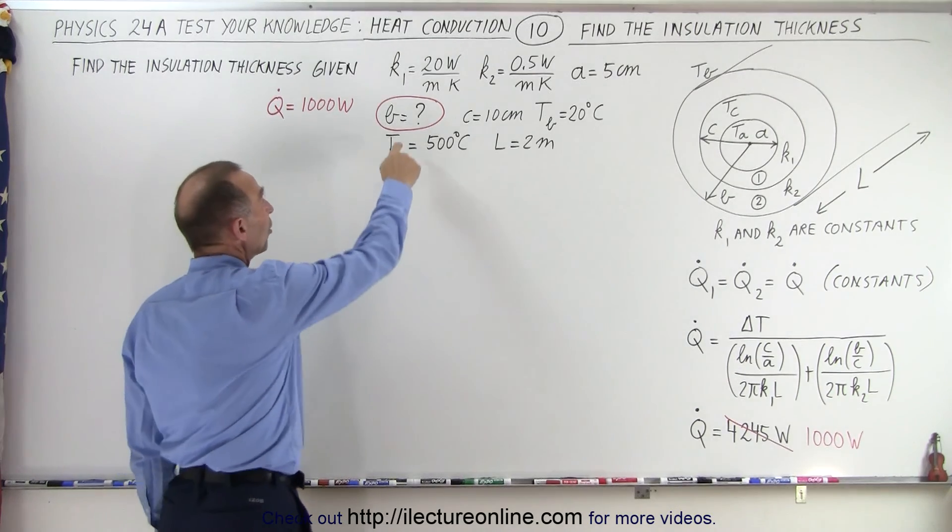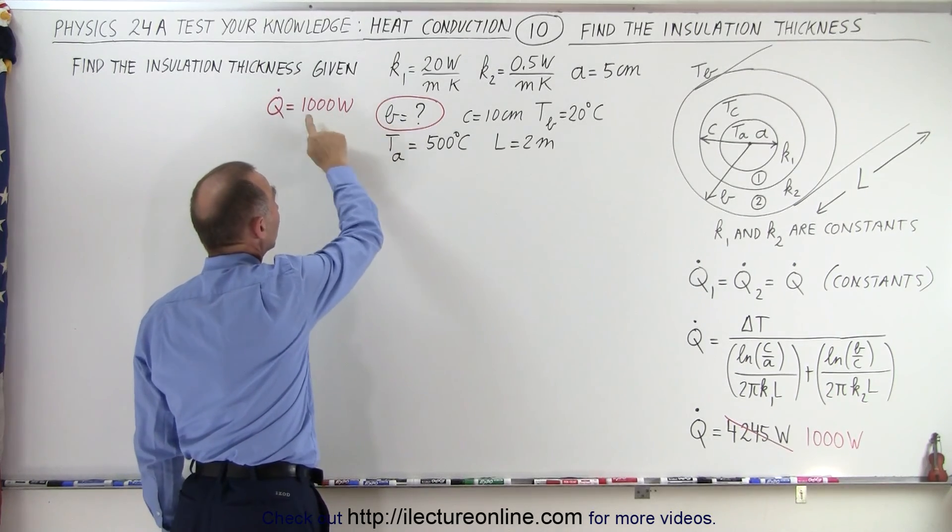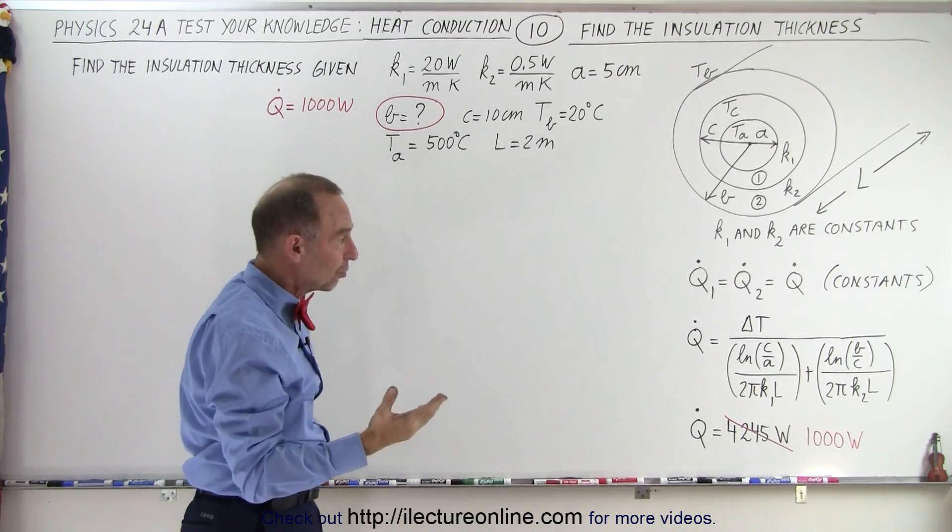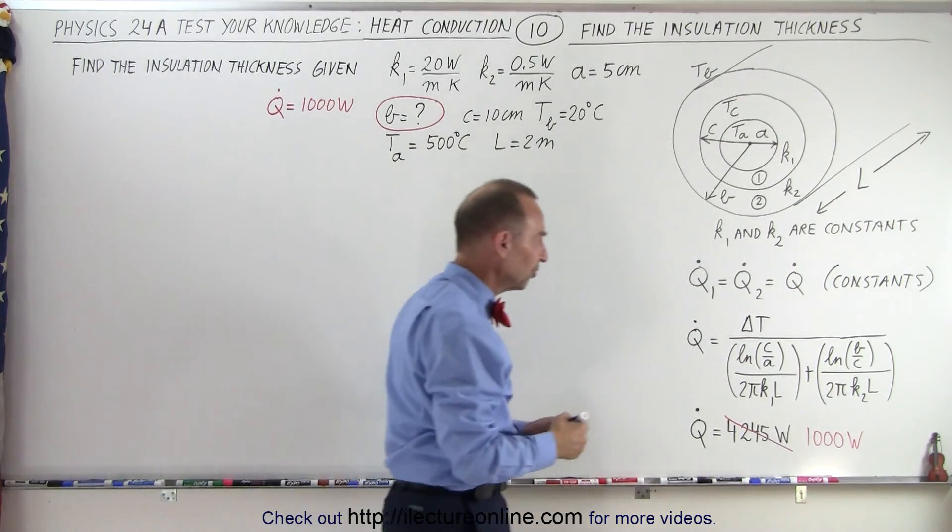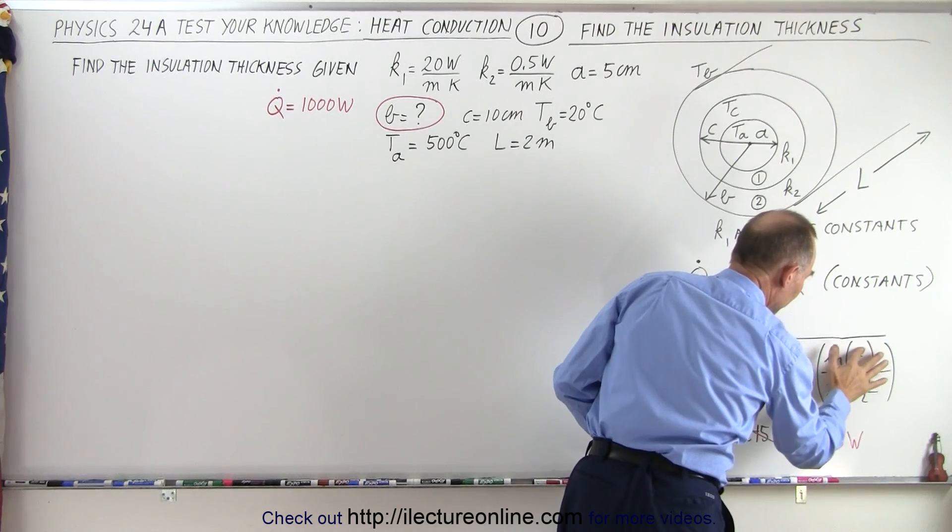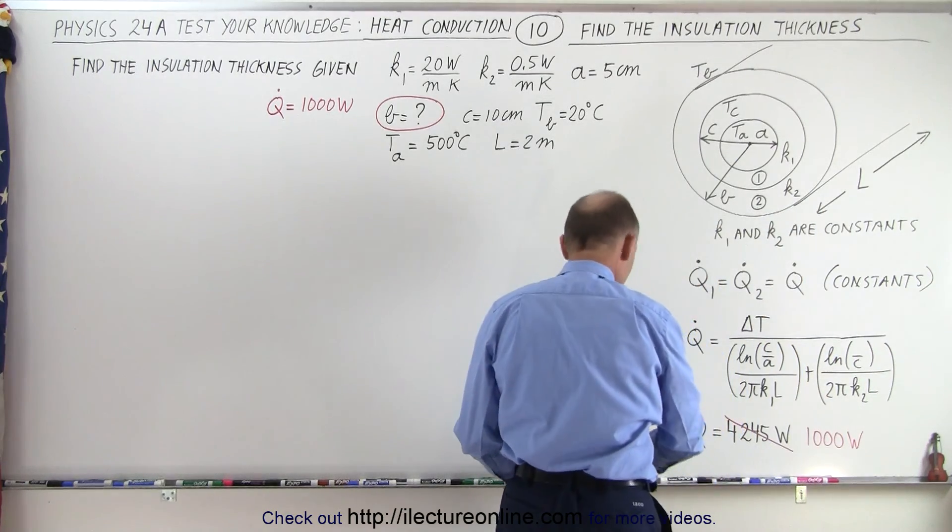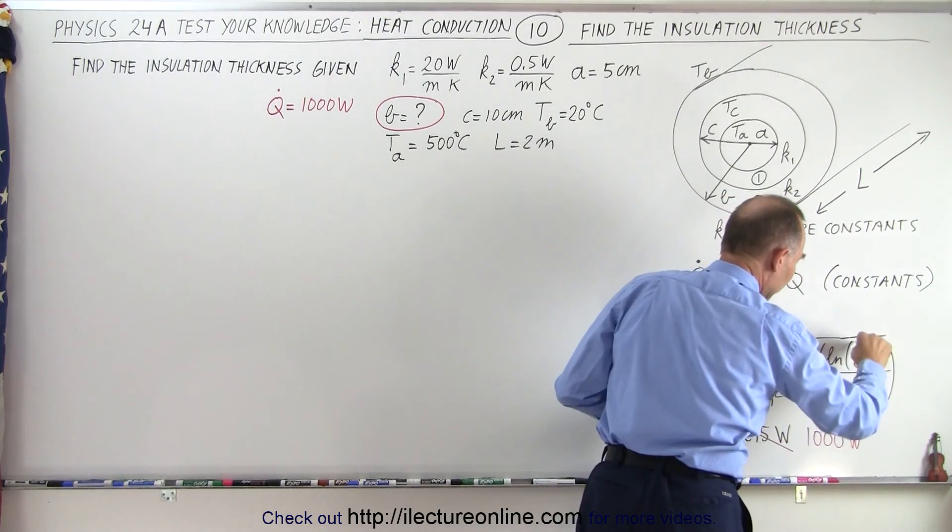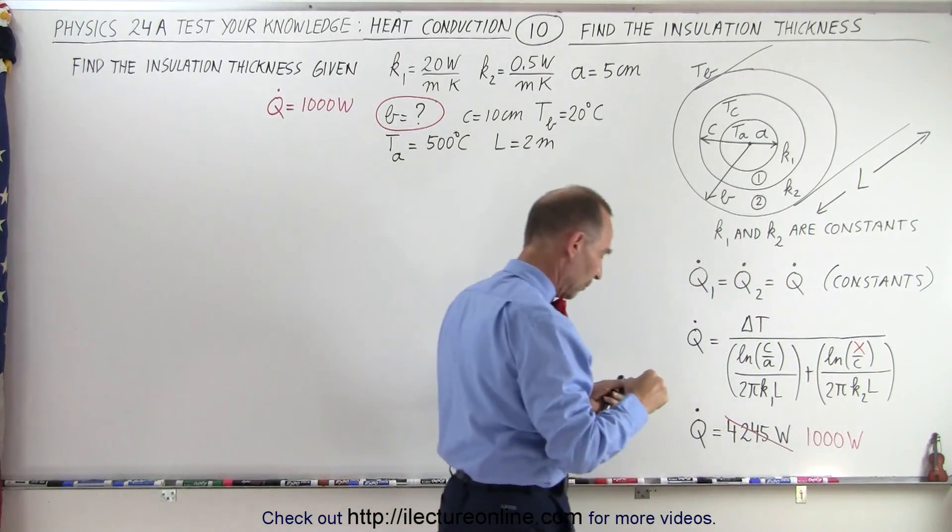Well, we're trying to find a new value for b given that the new heat transfer is a thousand watts, a thousand joules per second. In other words, what we're going to do here is change this b, let's call it an x, the unknown x. What is x equal to? So find x.